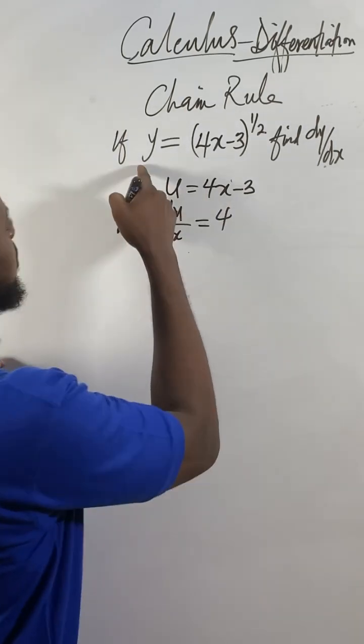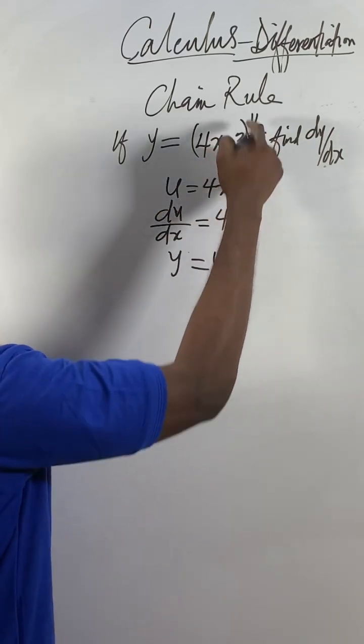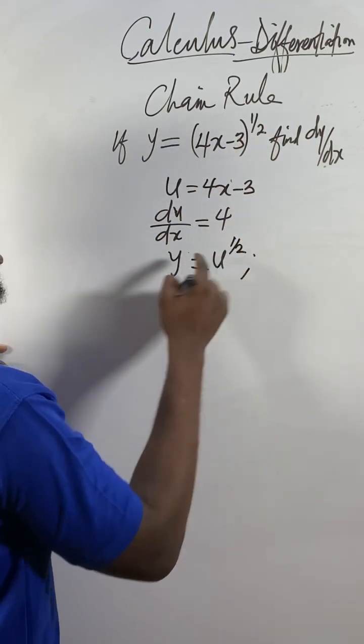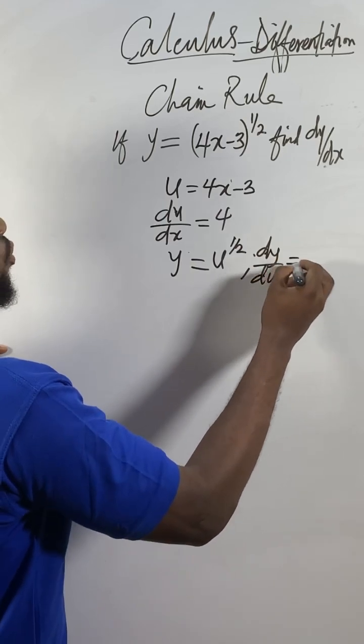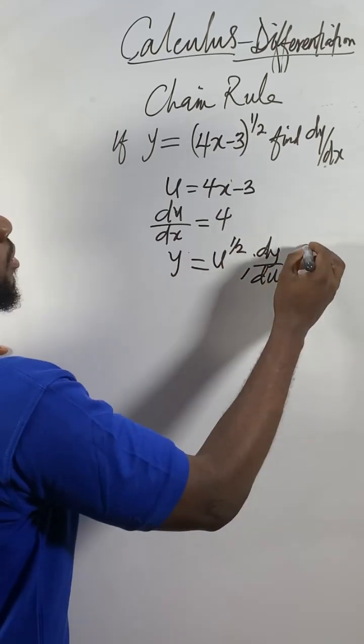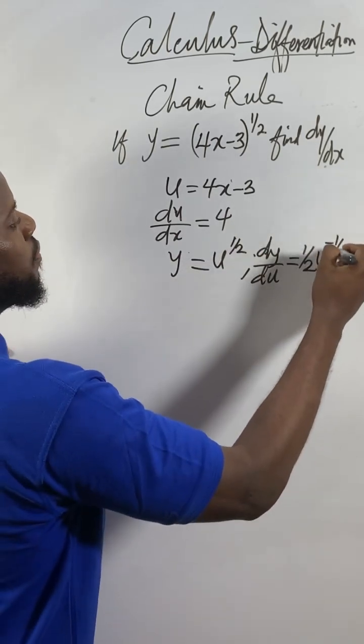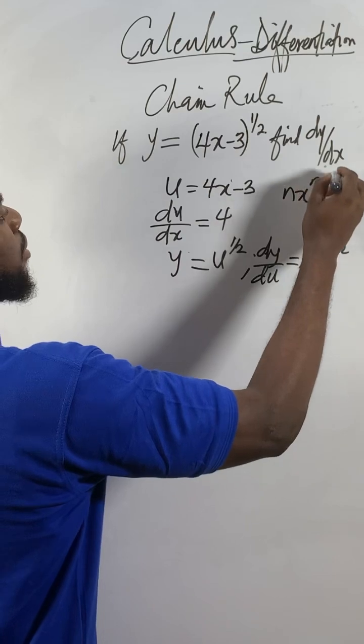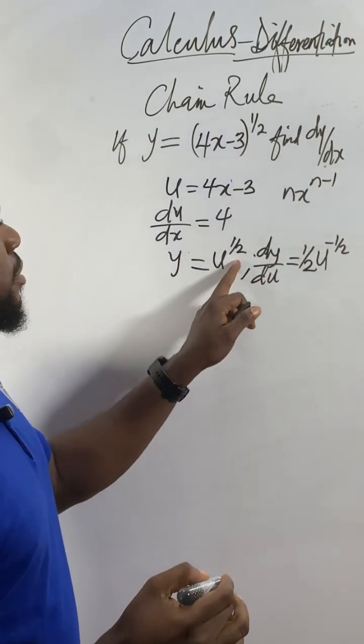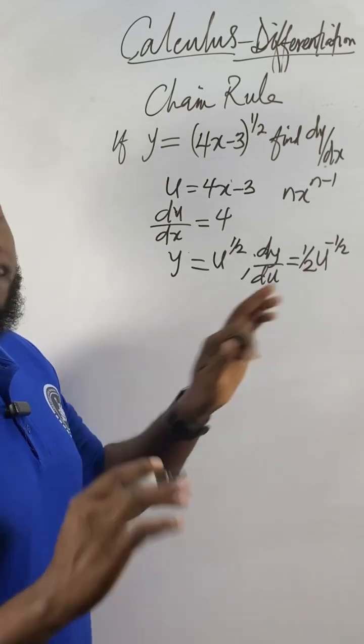Now rewrite the original equation as y = u^(1/2). Differentiate y with respect to u. The half comes down: (1/2)u^(1/2 - 1) = (1/2)u^(-1/2). I'm using the formula nx^(n-1). Since n is 1/2, we subtract 1 to get -1/2.